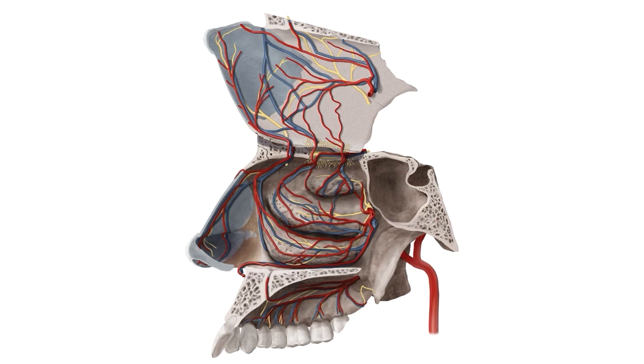As with other anatomical illustrations, the red vessels represent arteries, the blue vessels represent veins, and the yellow fibres represent nerves.